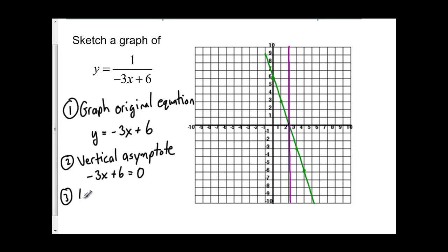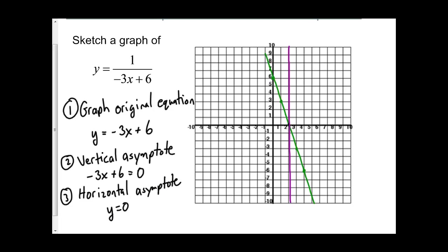Next, I'm going to find the horizontal asymptote. This horizontal asymptote is going to be what y cannot equal. In this case, y cannot equal 0 because there's no way using that equation to get y equal to 0. So the horizontal asymptote is always y equals 0, and I'm going to draw another asymptote going through y equals 0.